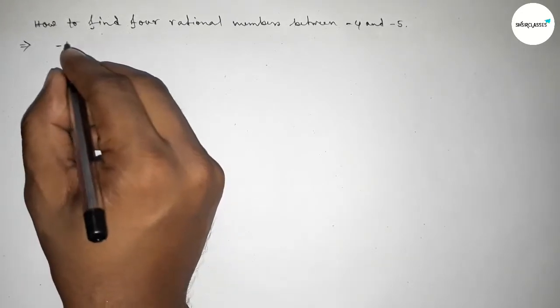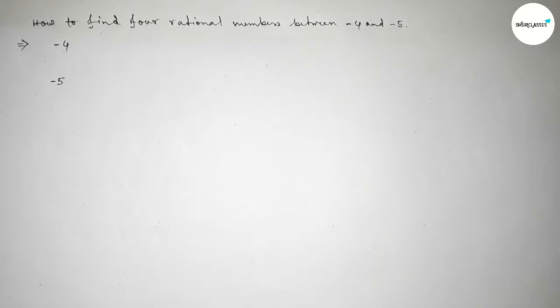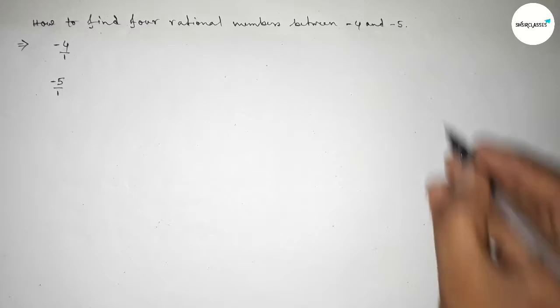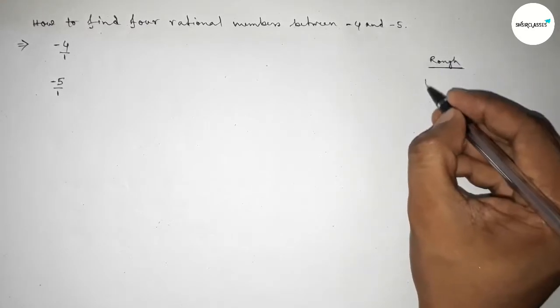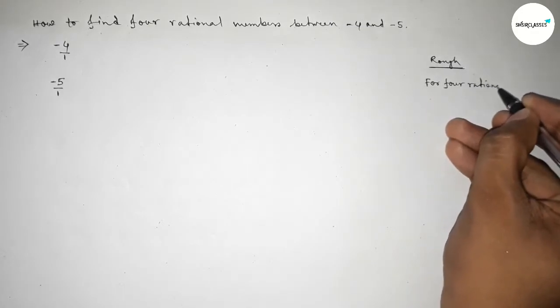Now we can write minus four as minus four over one and minus five over one. Now roughly discussing here an important method. So here the method is for finding four rational numbers between any two numbers, we have to follow this method.